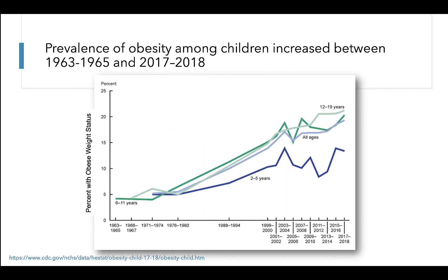Changes in the prevalence of obesity among children aged 2 to 19 years has paralleled increases seen in adults. This figure presents data comparing prevalence of obesity from the 1960s through the present day. On the x-axis we have the year of assessment, and on the y-axis we have the percent of children whose weight status was classified as obese. The light blue line represents all ages combined, and we see a slight increase between the 1970s and 1980s, but a very stark and significant increase between the 1980s and the 2000s. These trends are similar when we break out data for 2 to 5-year-olds, 6 to 11-year-olds, and 12 to 19-year-olds.